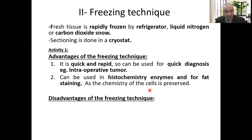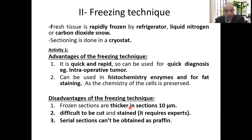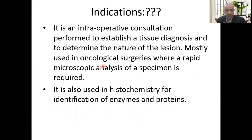The disadvantage is that sections are cut thick — at 10 micrometers — making them difficult to cut and stain, and the technique requires experts. Serial sections cannot be obtained as with paraffin technique. The indications are intraoperative consultations to establish tissue diagnosis and to determine the nature of the lesion, mostly used in oncological surgeries where rapid microscopic analysis is required. It is also used in histochemistry for identification of enzymes and proteins.